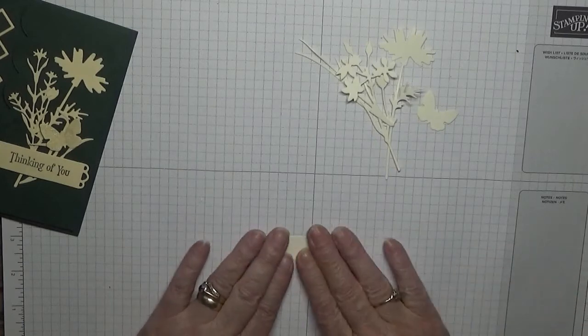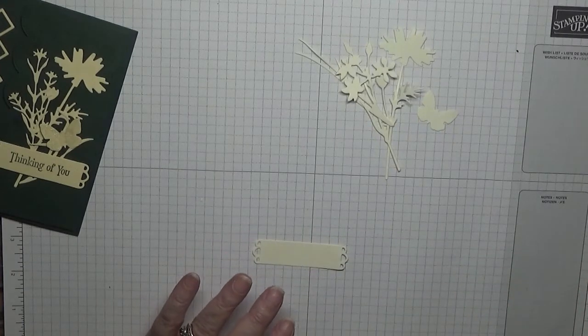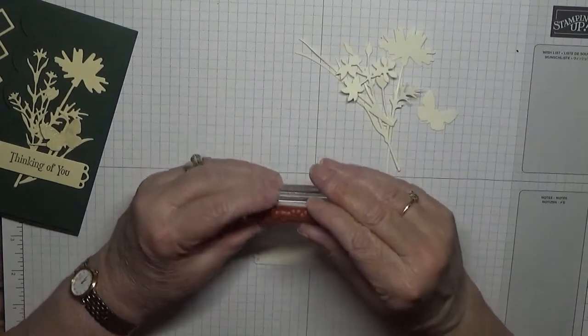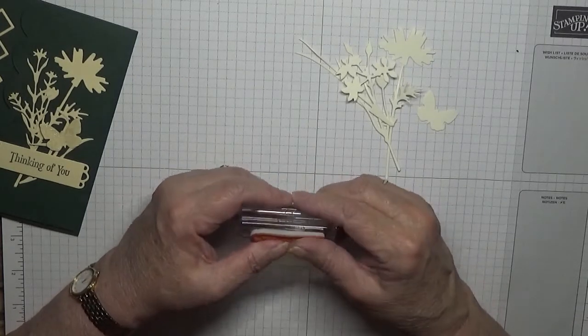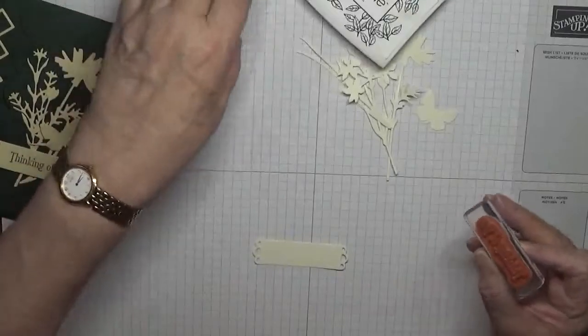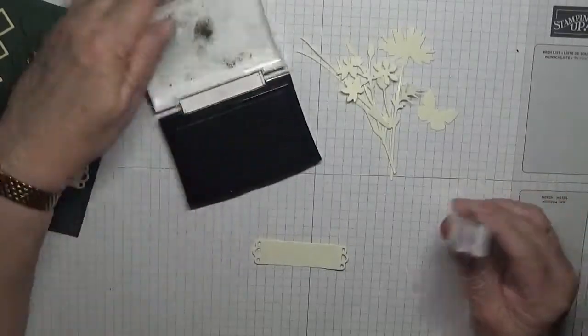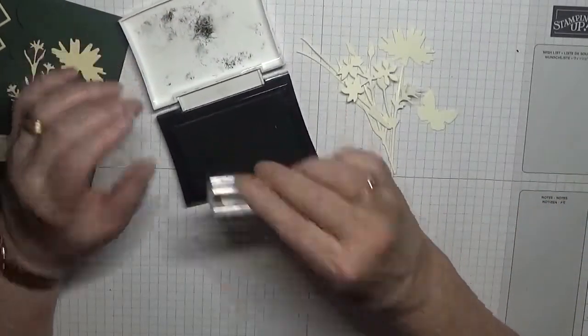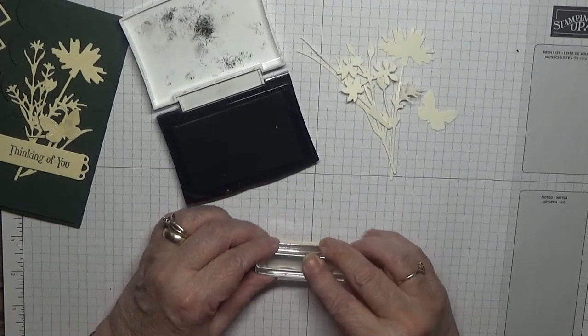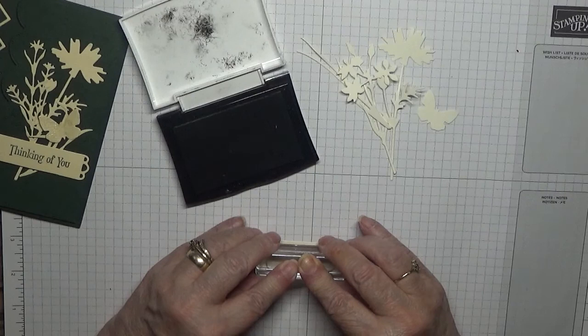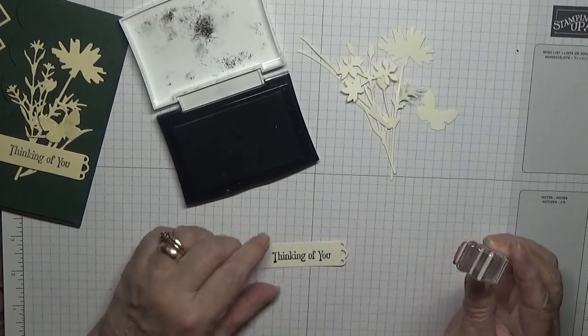There we are. We have our three bits of foliage and our butterfly. And we've just got to stamp our sentiment, which I've already got here. I'm making sure it's straight. I have our Versafine ink, and we're going to stamp that and try to keep it straight.